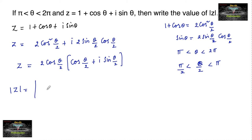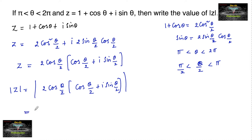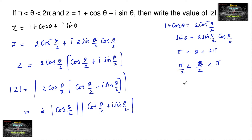Mod z is equal to the modulus of 2 cos(θ/2) multiplied by the modulus of cos(θ/2) plus i sin(θ/2). Since 2 is a constant we can bring it out, and using the property that modulus of z1·z2 equals mod z1 times mod z2, we get 2 times mod of cos(θ/2) times the modulus of cos(θ/2) plus i sin(θ/2).